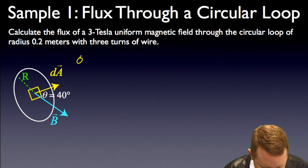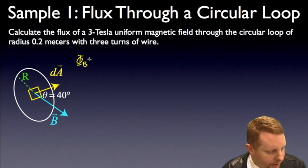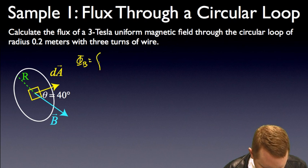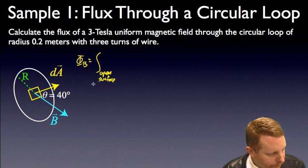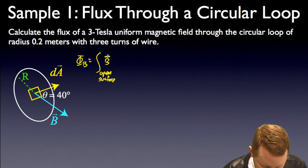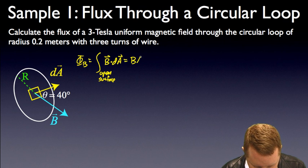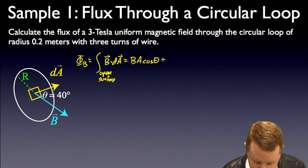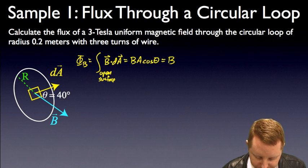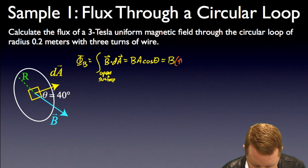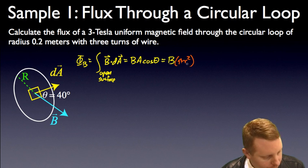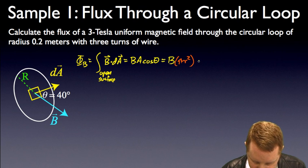Well, our flux, magnetic flux φ_B, is going to be the integral over the open surface of B dot dA, which is BA cosine θ, or B times our area. If this is a circular loop, is going to be πr², the area of a circle, times the cosine of θ.